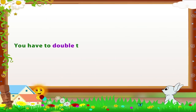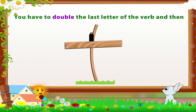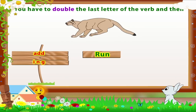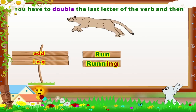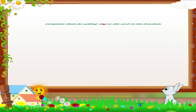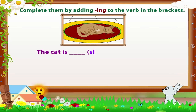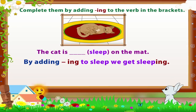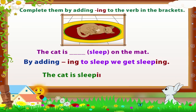Sometimes you have to double the last letter of the verb and then add -ing. For example: run → running. Here are some sentences with blanks. Let us complete them by adding -ing to the verb in brackets. 'The cat is sleeping on the mat' — by adding -ing to 'sleep' we get 'sleeping.'